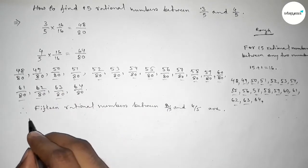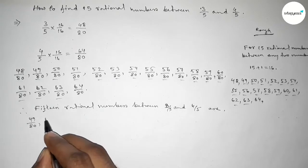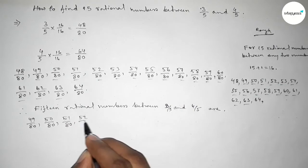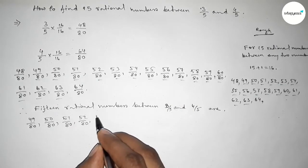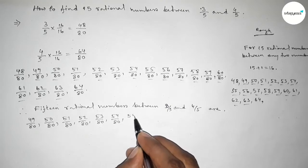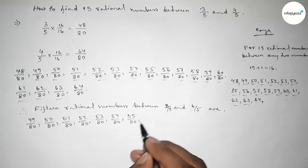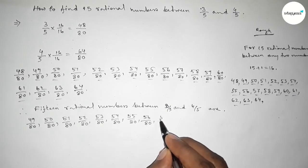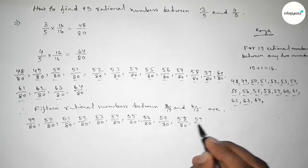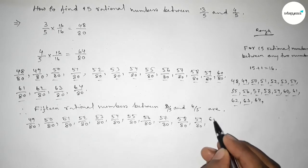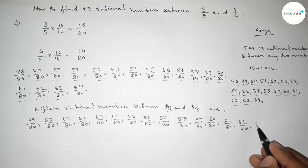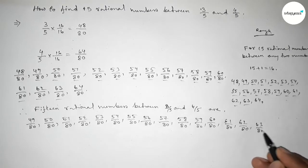The 15 rational numbers are: 49 over 80, 50 over 80, 51 over 80, 52 over 80, 53 over 80, 54 over 80, 55 over 80, and continuing up to 63 over 80. Write down all 15 rational numbers in this way.